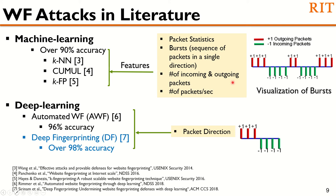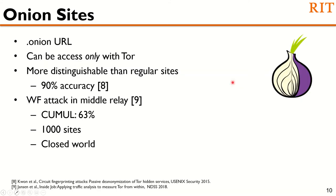The state-of-the-art website fingerprinting attacks are based on deep learning models. The AWF attack uses a CNN model achieving 96% accuracy in a closed-world setting. The Deep Fingerprinting attack uses a more advanced CNN and achieves over 98% accuracy using just the raw packet direction information. Onion sites, formerly known as hidden services, are special services provided by Tor to provide server anonymity. Previous research shows these sites can be distinguished from regular sites with over 90% accuracy. Recent research attempted to fingerprint onion sites from a middle relay using a Kamul attack, achieving up to 63% accuracy in a closed-world setting of 1,000 sites.